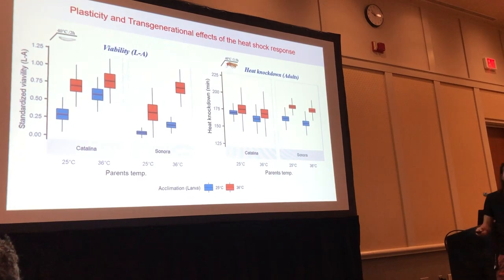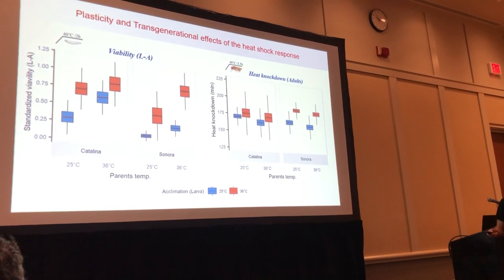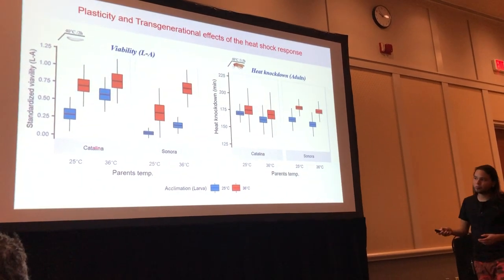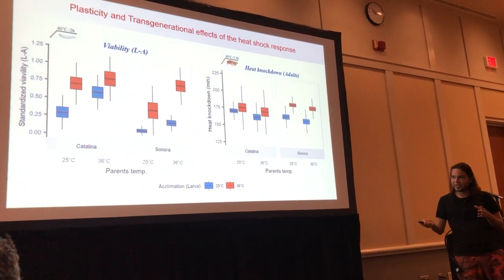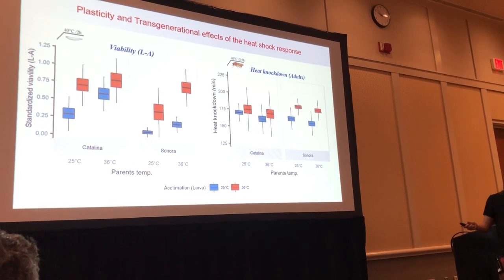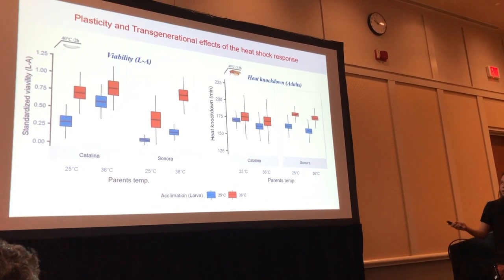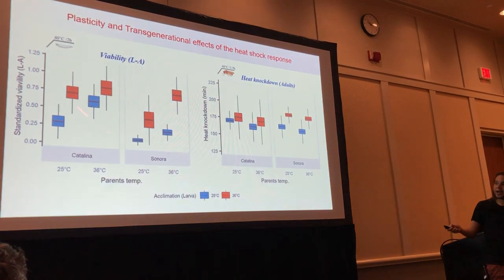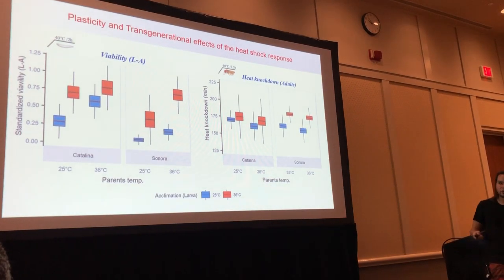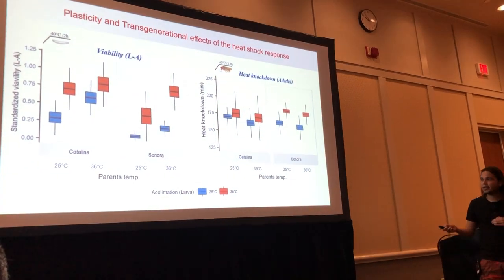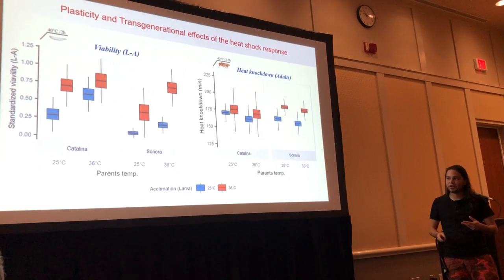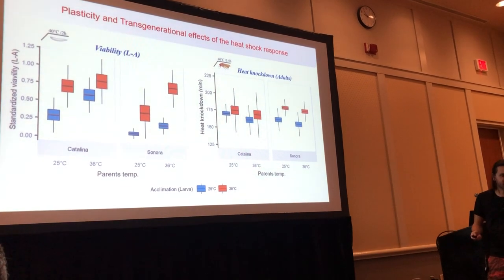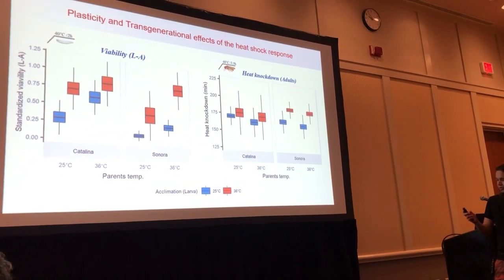In the larvae, because we have plasticity and transgenerational effects occurring at the same time, we see some very interesting interactions. When we compare between populations, we can see that both plasticity — even in adults, where plasticity was significant — and transgenerational effects in the case of larvae are both higher in the more fluctuating population in Sonora compared to Catalina, which was very consistent with the simulation data shown previously.